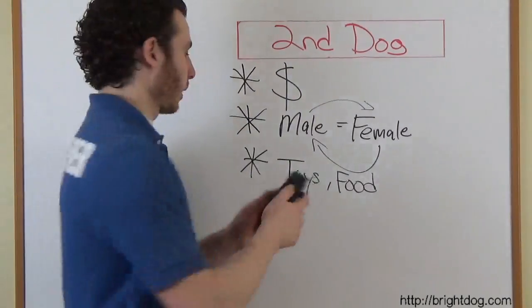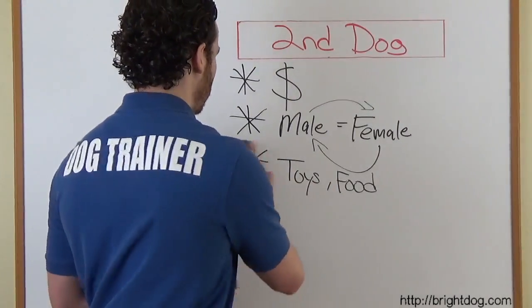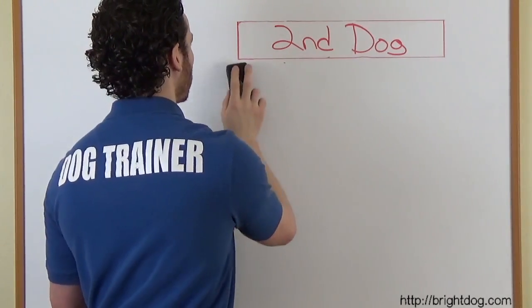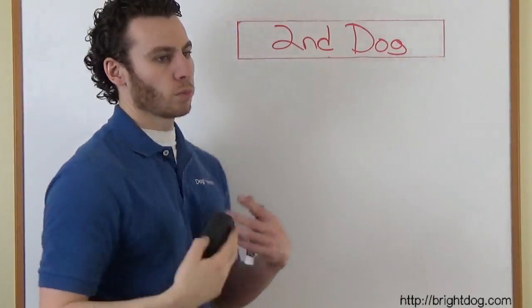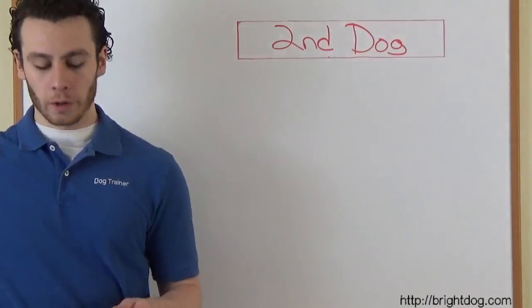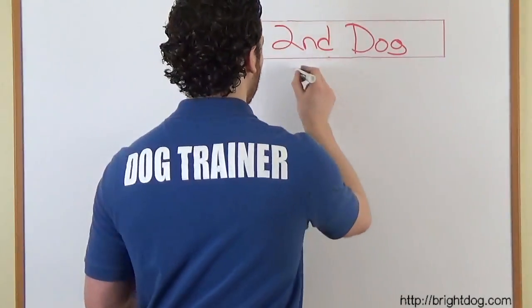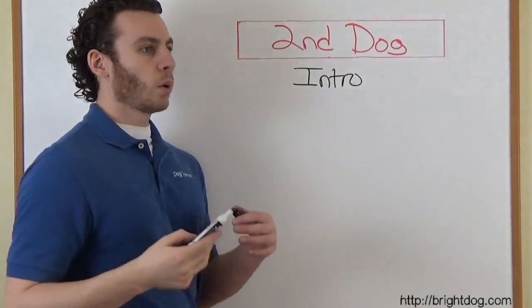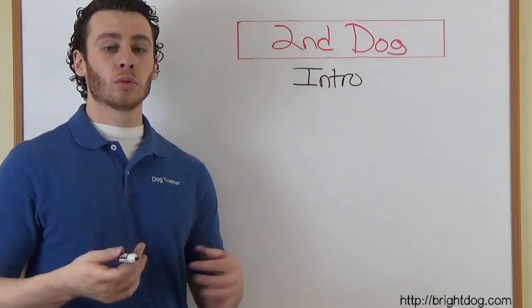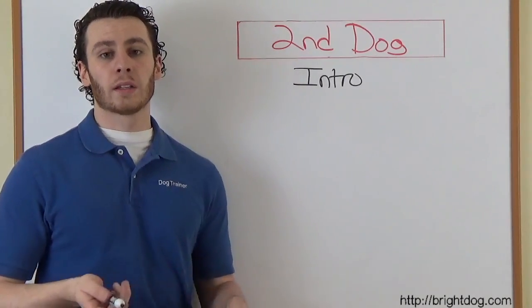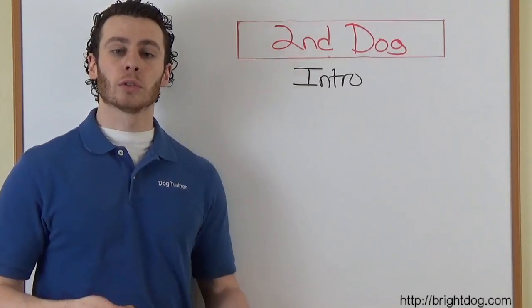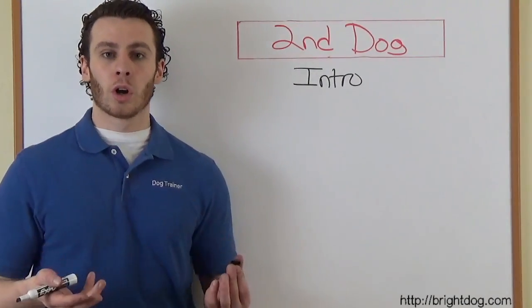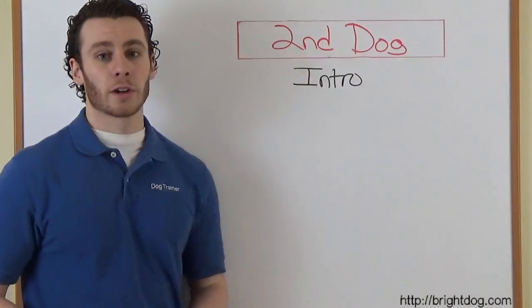Now, if you do end up getting a second dog, an important thing to keep in mind is the introduction. The way you introduce a second dog, particularly if you already have an adult dog and you're bringing home a second adult dog, what you're going to do to introduce them in the safest way is you're going to go outside and go on a neutral territory. We don't want to bring the new dog right into our home with the older dog. So if you can, go outside, go a few blocks away from the house so we're on neutral territory.